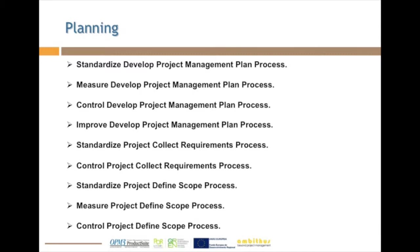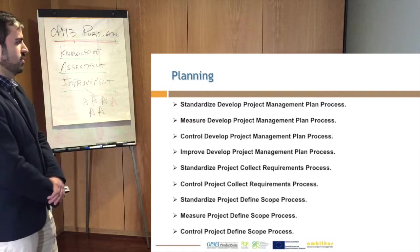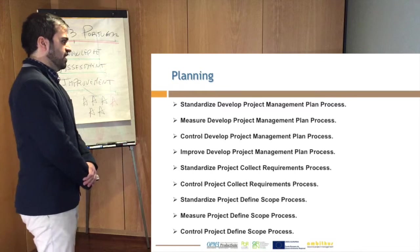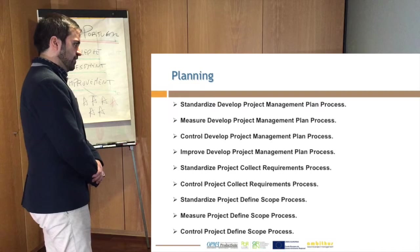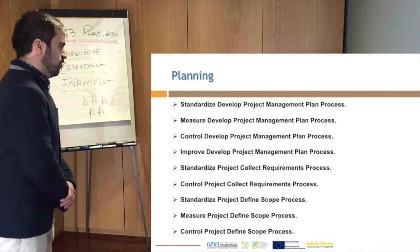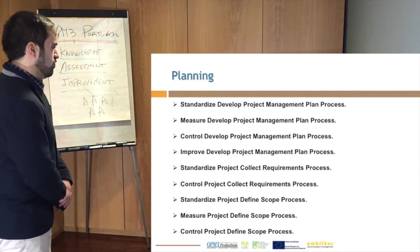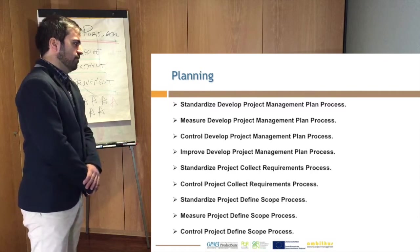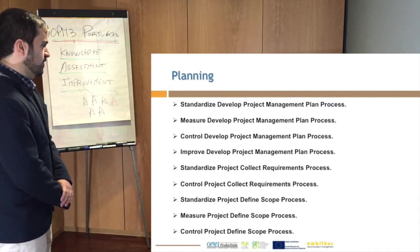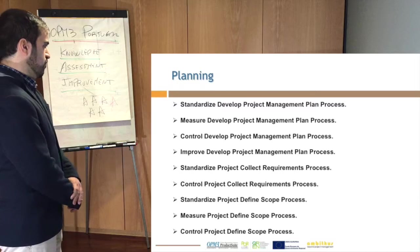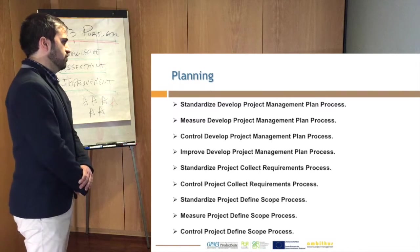Moving on to the planning stage, we have the project management plan. The first process, which is the main process, is recommendable to implement the full cycle — meaning standardization, measure, control, and improve should be implemented in these organizations. Following that, for collect requirements, we recommend to standardize and control, to complete the full cycle. After that, we have the definition of scope, which we recommend to standardize, measure, and control.